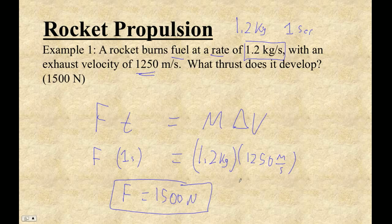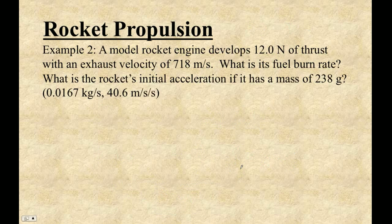So let's do one that's a little more difficult. It talks about the acceleration of the rocket. So a model rocket engine develops 12 newtons of thrust. I know right away that this is a D12 engine because nothing else generates 12 newtons of thrust unless it's some other engine that does. So that's the thrust. That is the exhaust velocity. And what is its fuel burn rate? And then this is like a separate question here. So, because it's not saying that it burns 238 grams per second.